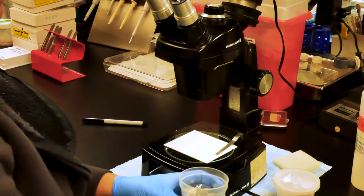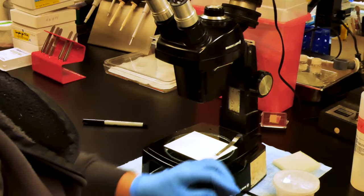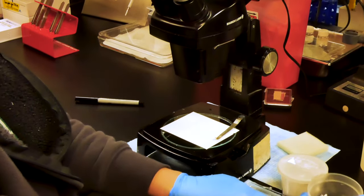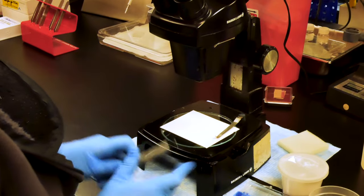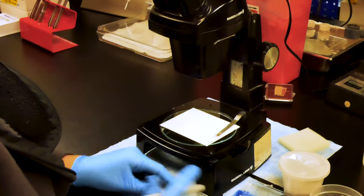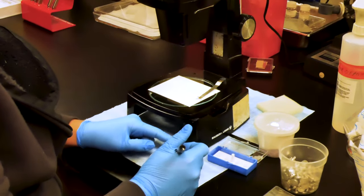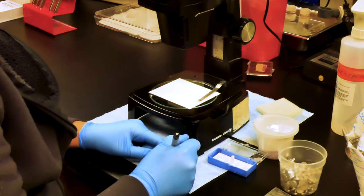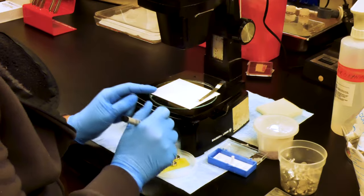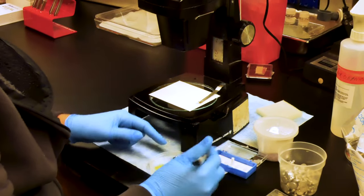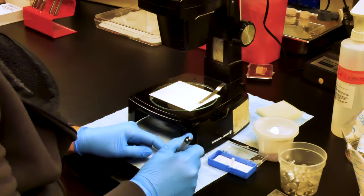With gloved hands, we will remove the number of stubs that we need. Today we need two. We will label the underside of the stub with the specimen name. This is a very important step. If you forget, then if your stubs were to get out of order after you've mounted your sample, it would become very difficult to determine which is which.